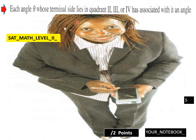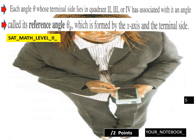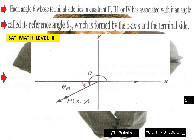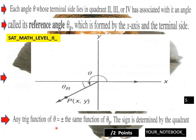Each angle theta whose terminal side lies in quadrant 2, 3, or 4 has associated with it a reference angle theta-r, which is formed by the x-axis and the terminal side. Here's theta, and the reference angle is theta-r — from your x-axis to this angle. Theta starts from the initial side, whereas theta-r is your reference angle. There are two different angles in this situation.